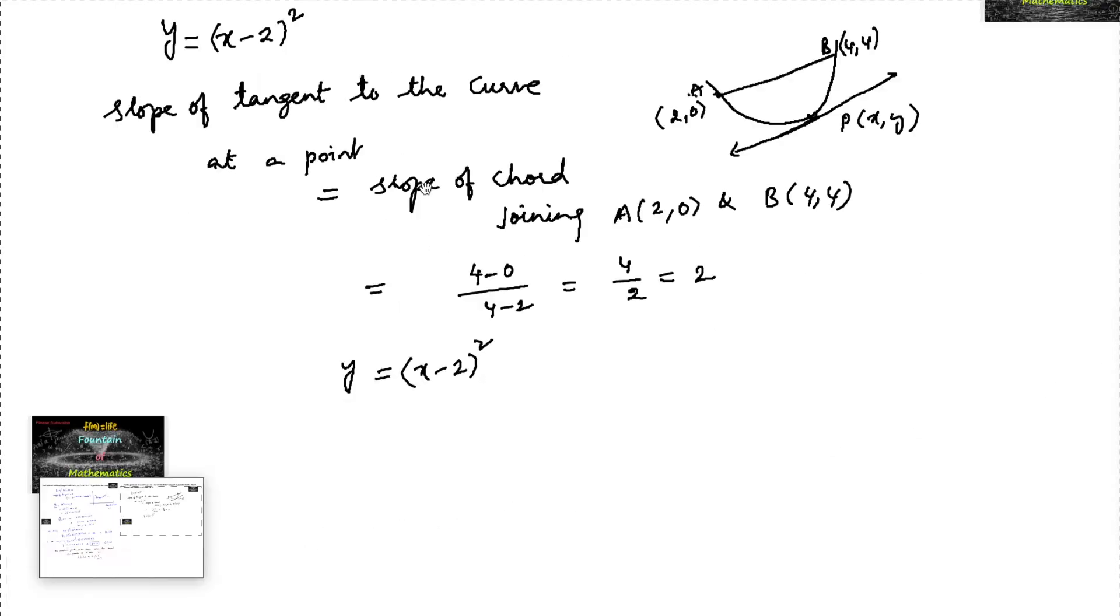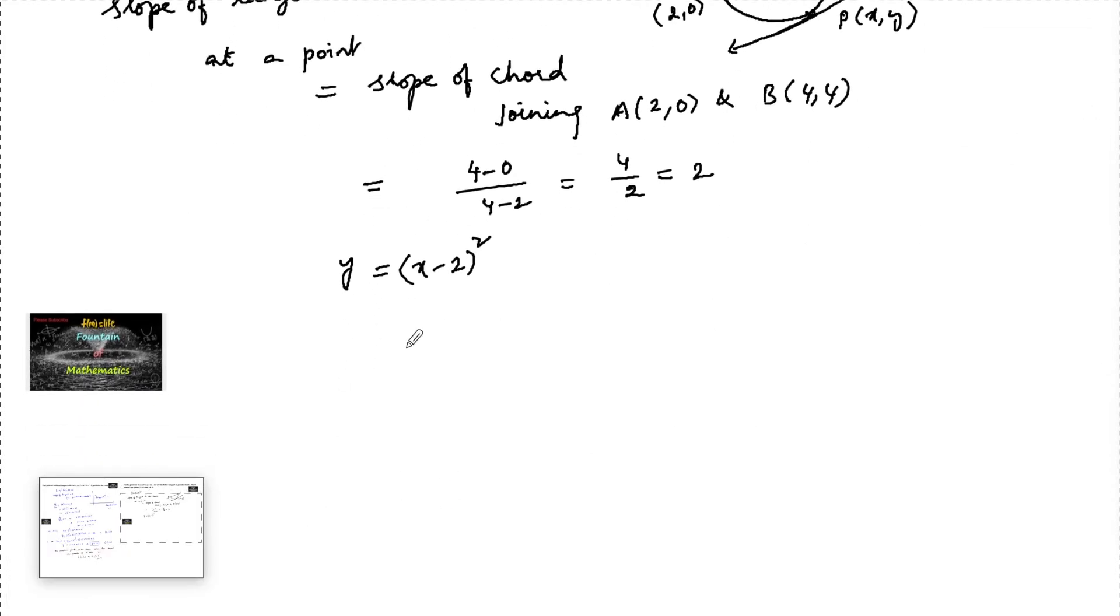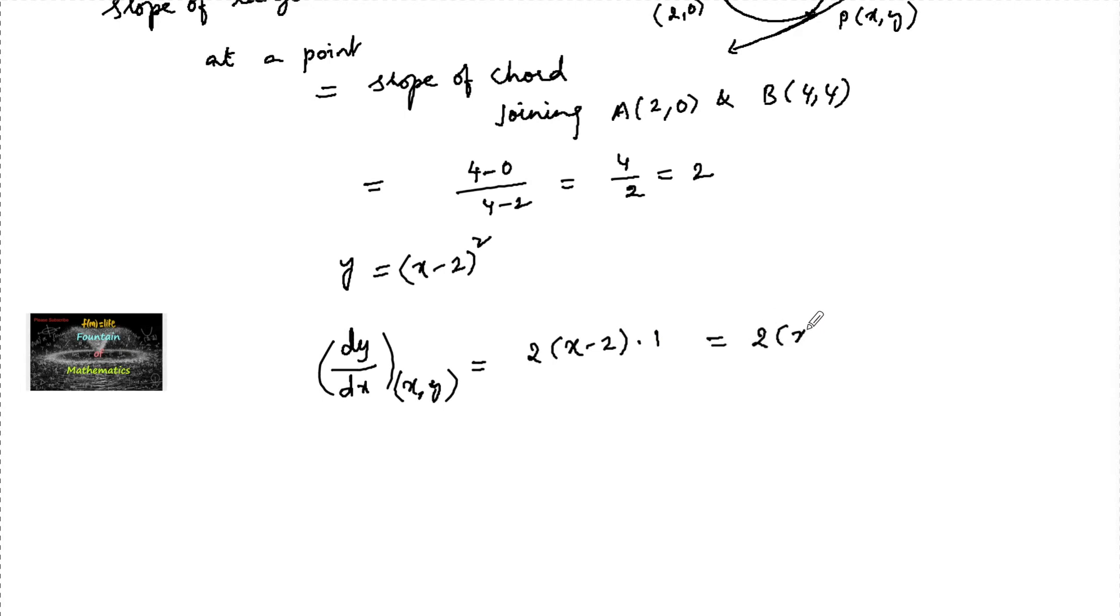We have dy/dx at a point (x, y). We can write it as 2 times (x - 2) into differentiation of (x - 2) is 1. That is 2(x - 2).